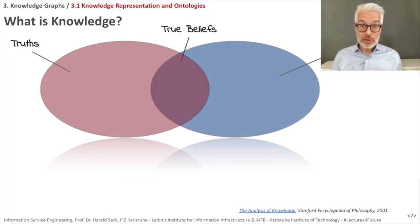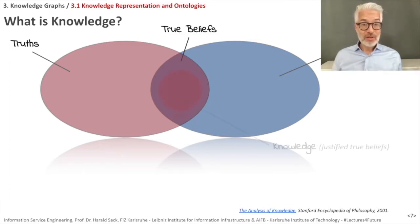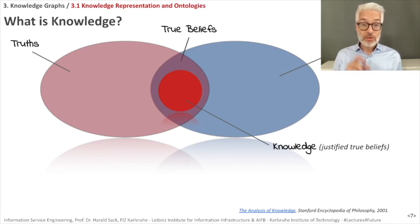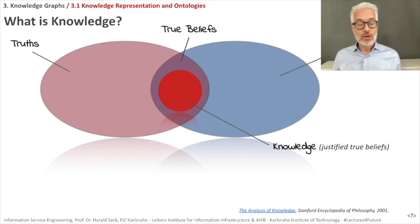Now we are coming closer to what is knowledge. Are the true beliefs already knowledge? The point is: do we really know which of our beliefs are really true? Only a fraction of the intersection between beliefs and truths is the part that is justified to be true. So knowledge is justified true beliefs. Justification is a term used in epistemology — a belief is justified if one has good reason for holding it, or proof for example.